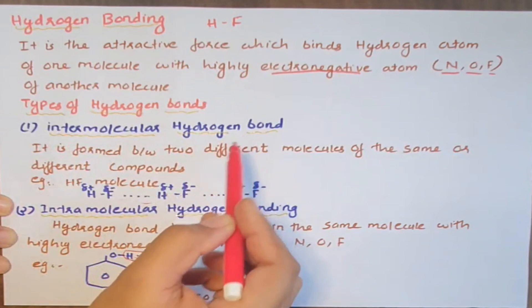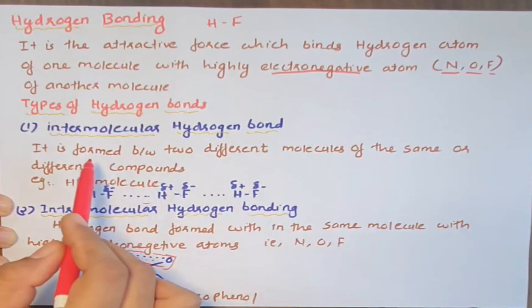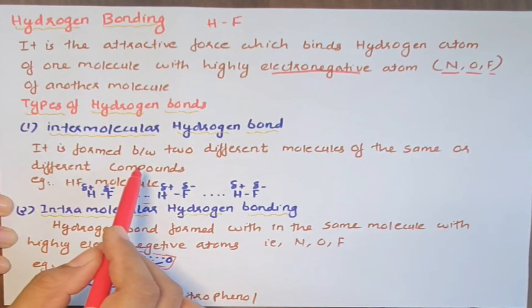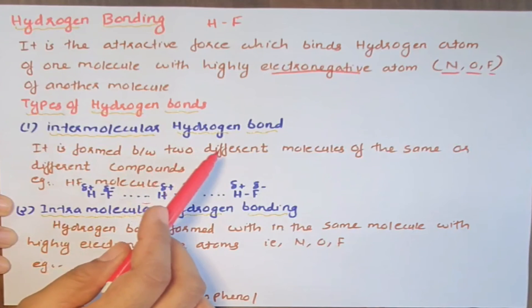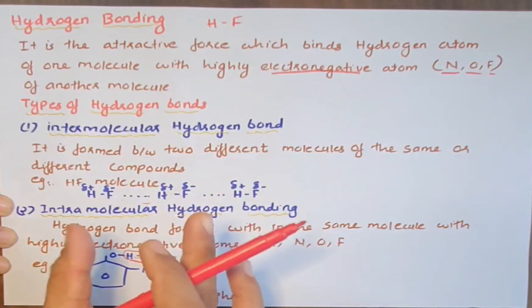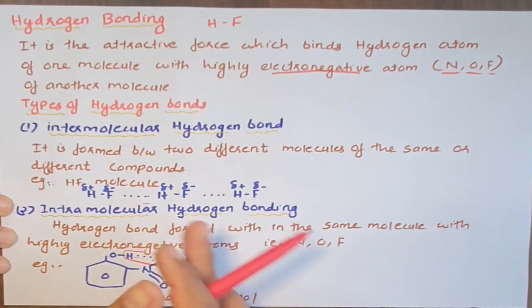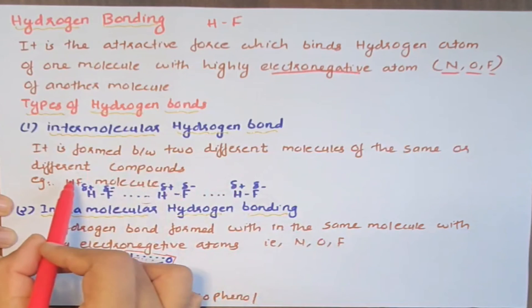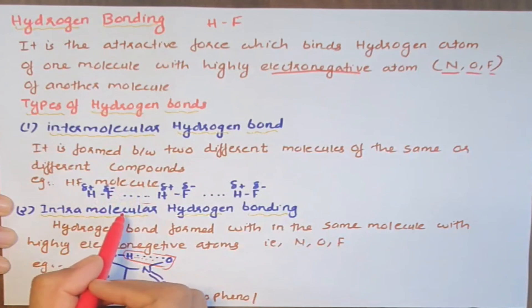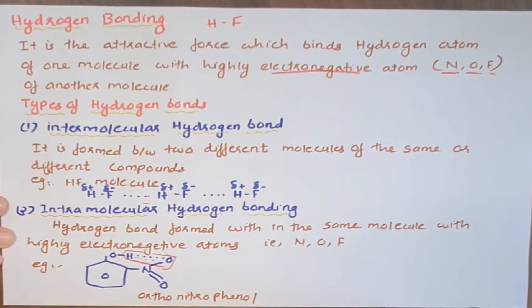In summary: Intermolecular hydrogen bonding occurs between two different molecules of the same or different compounds — for example, HF molecules. Intramolecular hydrogen bonding occurs within the same molecule — for example, ortho-nitrophenol.